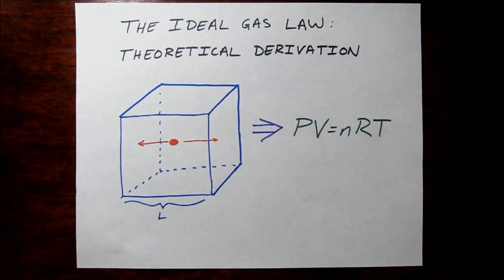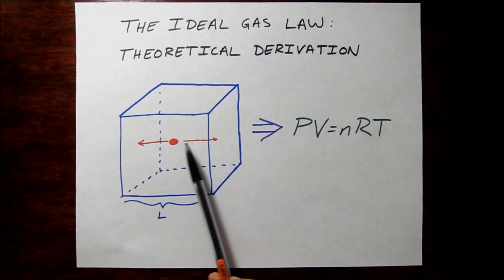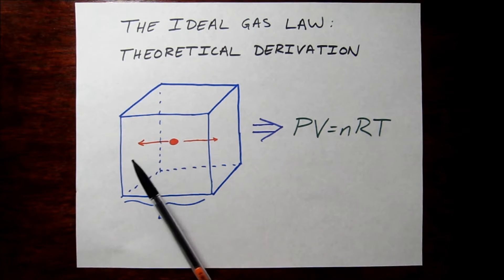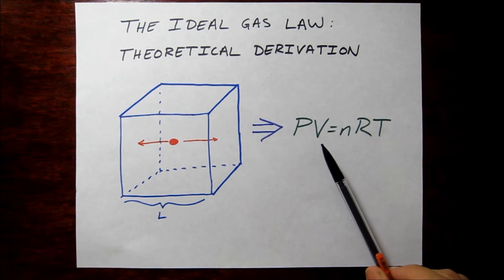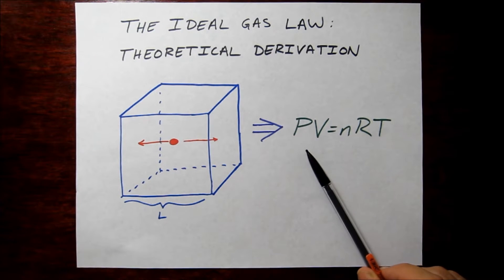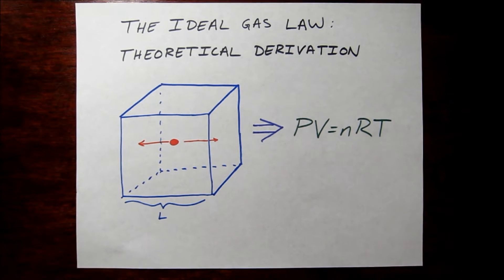This video will be about a theoretical derivation of the ideal gas law. By thinking about a particle bouncing off walls in a box, we can arrive at the ideal gas equation PV equals nRT.